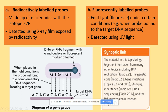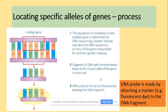To recap: probes are single-stranded, short fragments of DNA — or could be RNA — and they can bind to our target DNA. So let's look at how it works. This is our mutated gene. We can use the probe to identify if a person has a genetic disorder. Knowing the sequence of the mutated gene, we can produce the complementary DNA probe to that mutated gene. This probe can be either fluorescently labelled or radioactively labelled.